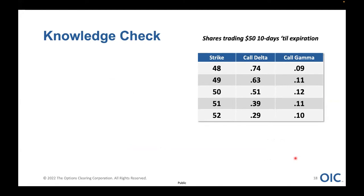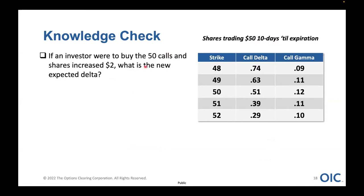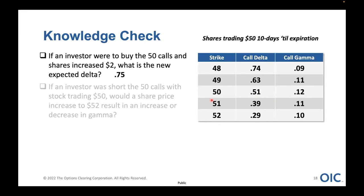Let's do a second knowledge check based on gamma. With shares trading $50, with 10 days to go to expiration, if an investor buys the 50-level calls — which have a delta of $0.51 and a gamma of $0.12 — and the shares go up by $2, what do you think the new delta is going to be? The stock goes up by $2. Gamma is how much your delta changes with a $1 move. So 2 times $0.12 equals $0.24. Adding $0.24 to $0.51, our new delta in theory should be $0.75 on these options with the stock up $2.